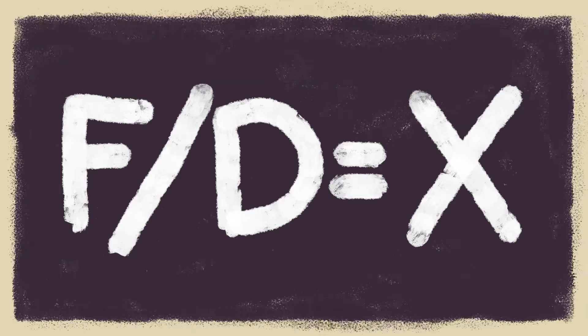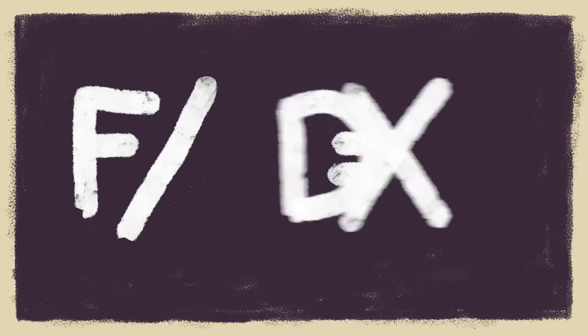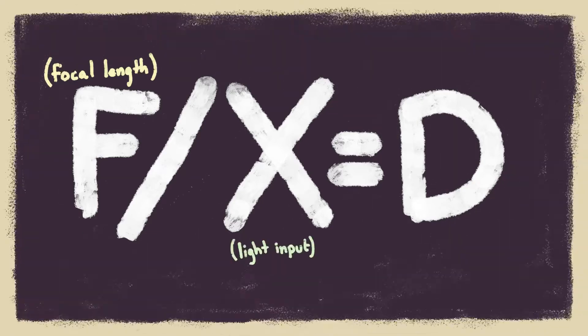On a literal level, the f-stop can be defined as a proportion between the aperture's diameter and a lens's focal length. The f in this equation stands for the focal length of the lens and the d stands for the diameter of the aperture. Dividing these two numbers gives us x, or the amount of light that we'll be getting into our camera. We can rewrite this proportion as f over x equals d, so that any given focal length will give us x amount of light based on the diameter of our aperture.